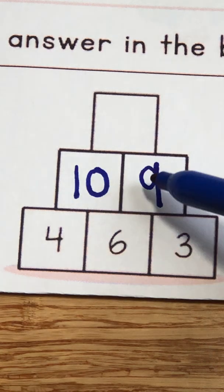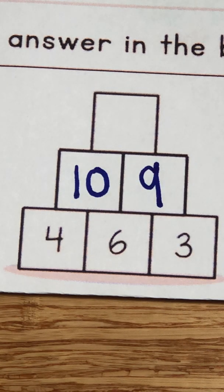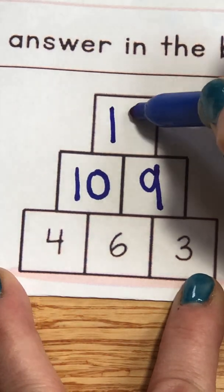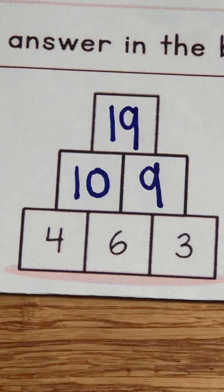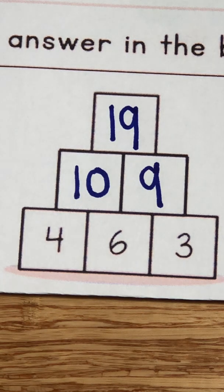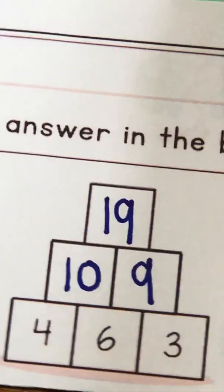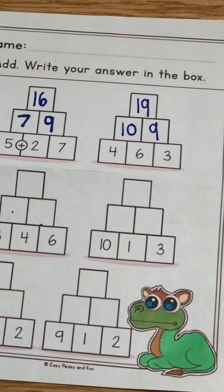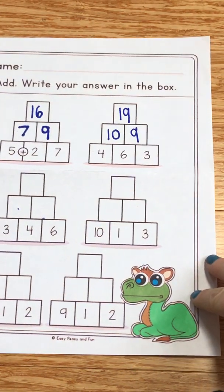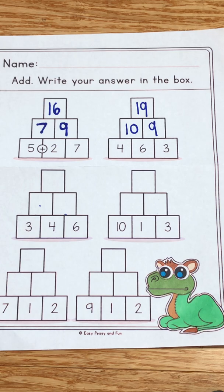Now we have a ten and a nine. So ten plus nine equals 19. We would like for you to go ahead and finish the rest of this sheet. Once you finish your problems, whether you made them on your own or whether you printed it out, we would like for you to take a picture and send it to your teacher. Thanks.